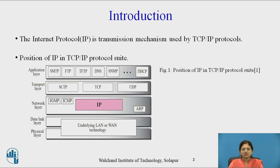Here IGMP stands for Internet Gateway Message Protocol. ICMP stands for Internet Control Message Protocol. IP is Internet Protocol and ARP is Address Resolution Protocol. There is one more protocol: RARP, that is Reverse Address Resolution Protocol. On top of the network layer,